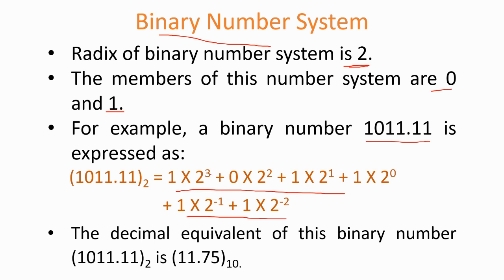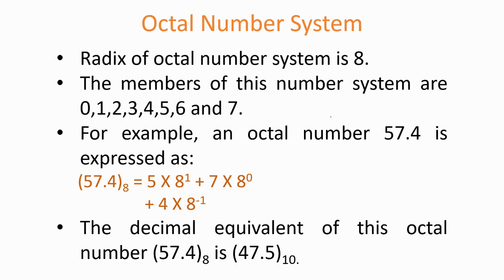Multiplying each binary digit by its corresponding power of 2 and adding them gives the decimal equivalent, which for 1011.11 is 11.75. The next number system is the octal number system, where the base or radix is 8 and the digits range from 0 to 7. Numbers are multiplied by powers of 8. For example, 57.4 in octal is expressed as 5 × 8^1 + 7 × 8^0 + 4 × 8^(-1), which gives the decimal equivalent 47.5.